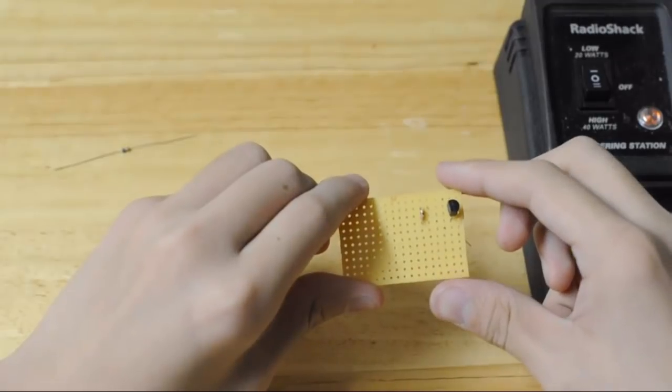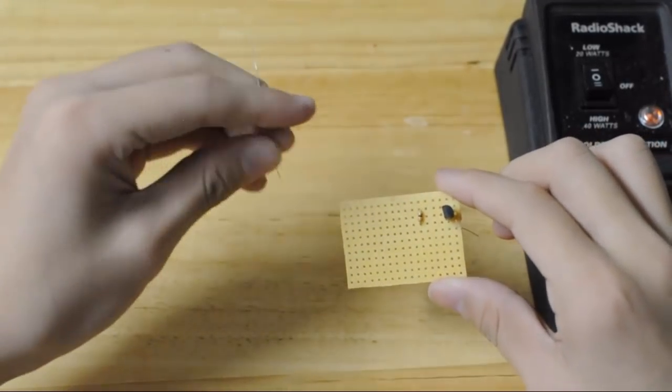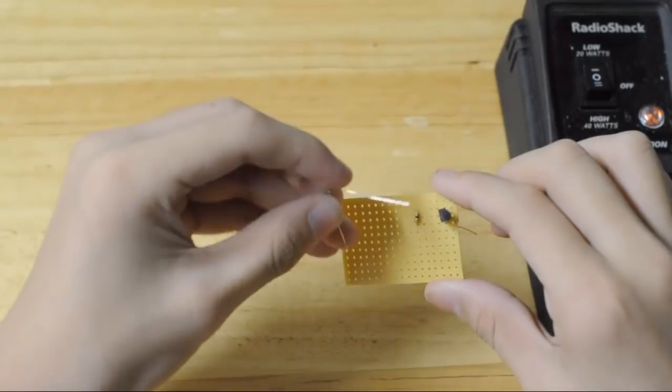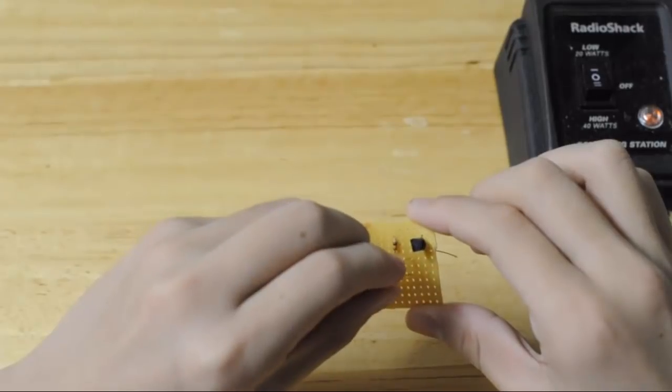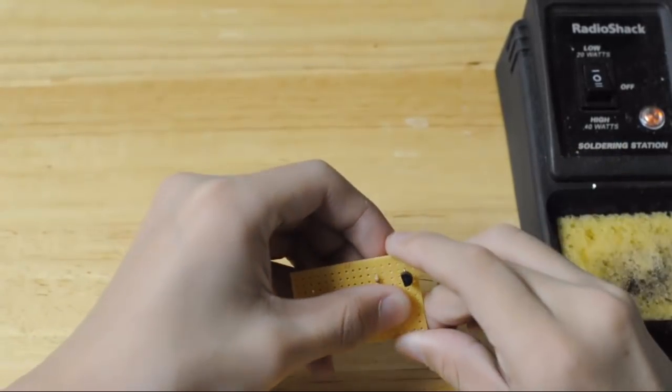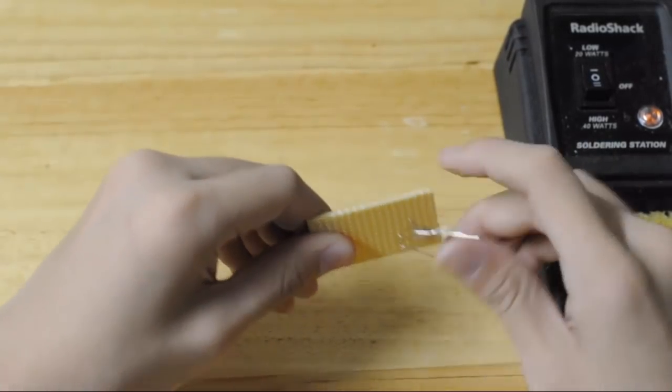Next take your 5600 ohm resistor and you need to put it in the middle of the 33 ohm resistor and the transistor only a little bit below. When you insert this in, you need to also fold the legs back so that it stays in place.